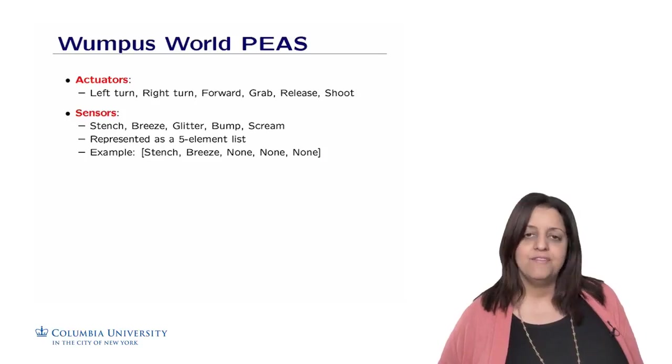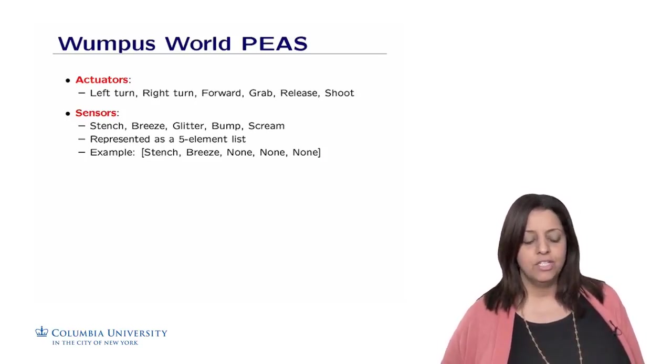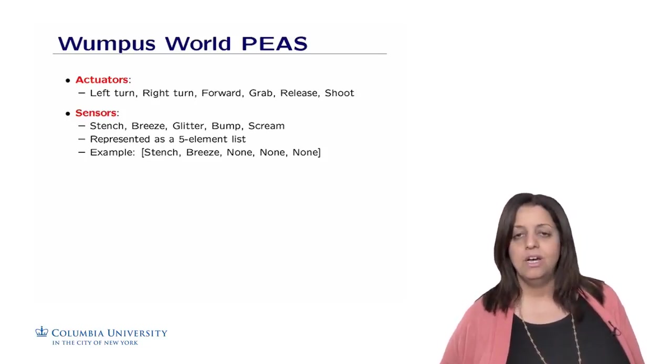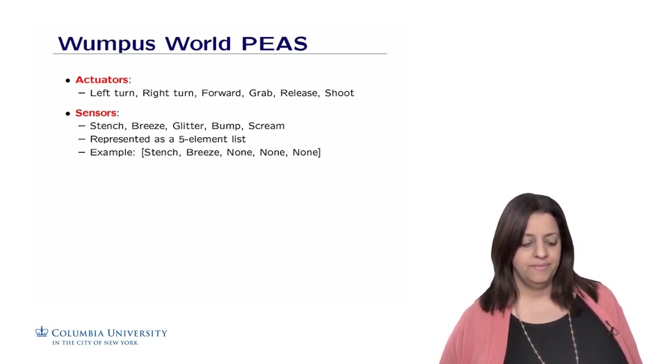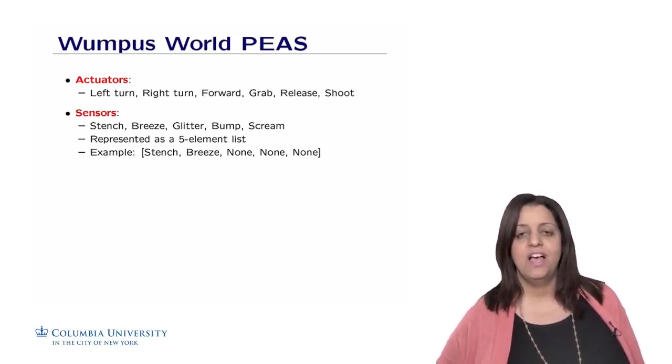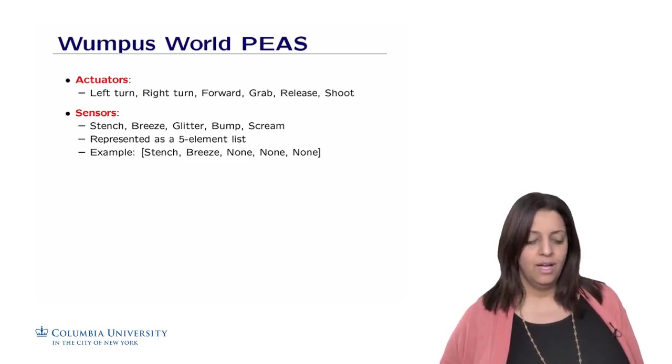This can be represented as a five element list in which we have an indicator for each of these sensors. For example, stench, breeze, none, none, none expresses the fact that there is in the adjacent room a Wumpus and a pit. So we have to figure out which rooms have actually these two elements.